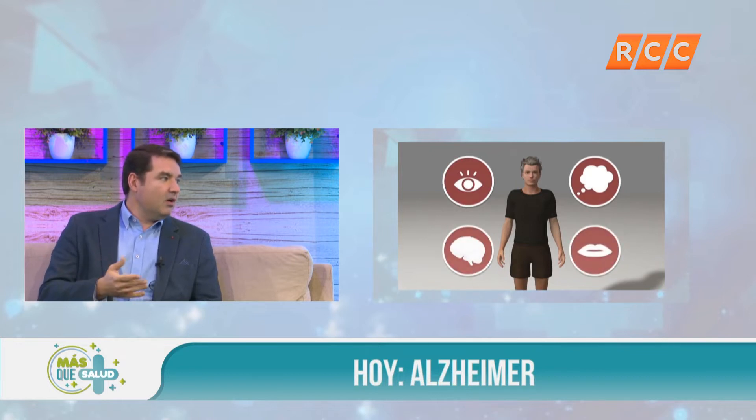El Alzheimer es la enfermedad que produce demencia más frecuente relacionada a la edad. Con el aumento de la edad aumenta la incidencia de la enfermedad. Eso tiene una traducción que puede ser un prejuicio: que con la edad es normal tener problemas de memoria. Eso hay que descartar, siempre es una enfermedad. Quizás con la edad aumente la frecuencia, pero no es normal que una persona mayor de 60 años tenga un problema de memoria. Solamente 4% de la población de 65 años tiene enfermedad de Alzheimer, aproximadamente 4 de cada 100 personas.